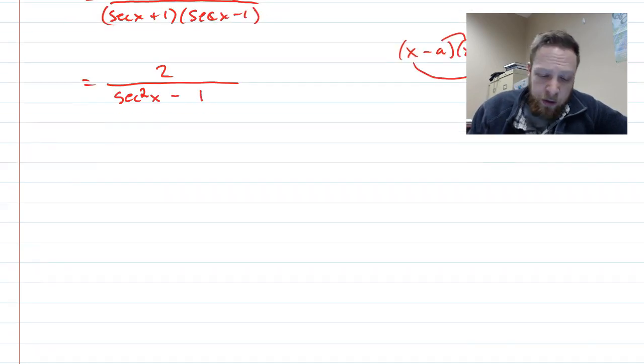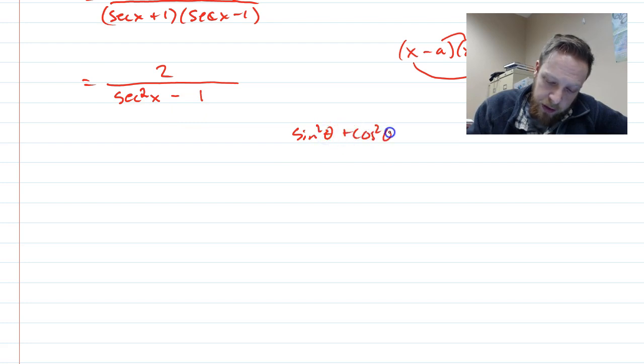All right, and we're almost done. See, this here, you may remember with Pythagorean identities that, well, first of all, you can write out this guy here,